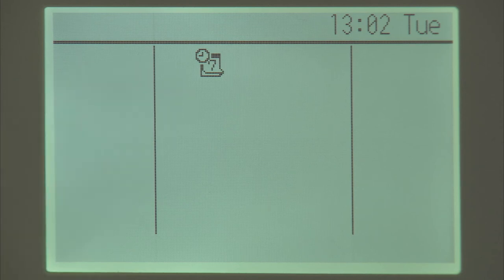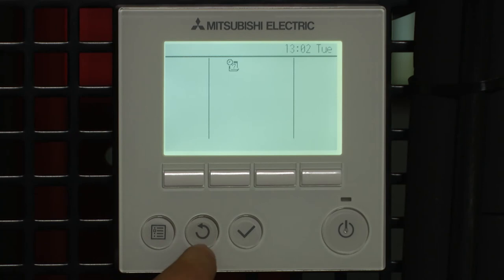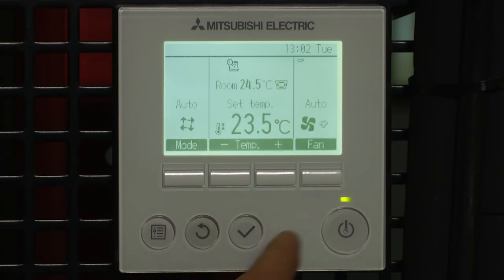You'll notice now on the symbols there we have a new symbol showing the weekly timer. With the weekly timer we didn't have the option of changing the modes. So what I recommend you doing is making sure the system is set in auto mode.